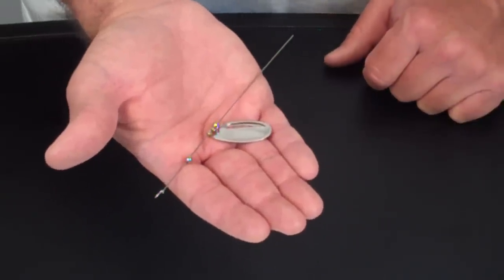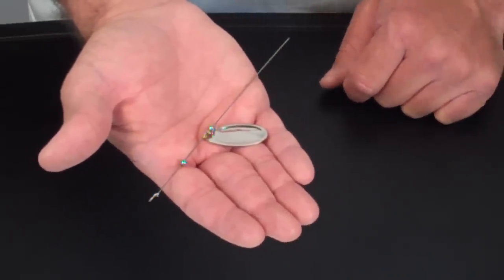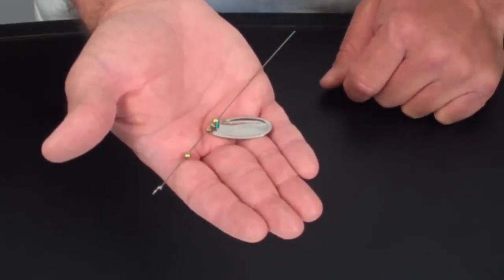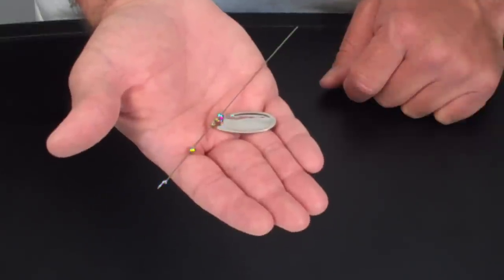So let's get started assembling our inline spinner. We'll use a closed eye wire shaft, a hollow metal bead, a clevis and spinner blade, and a second hollow metal bead.